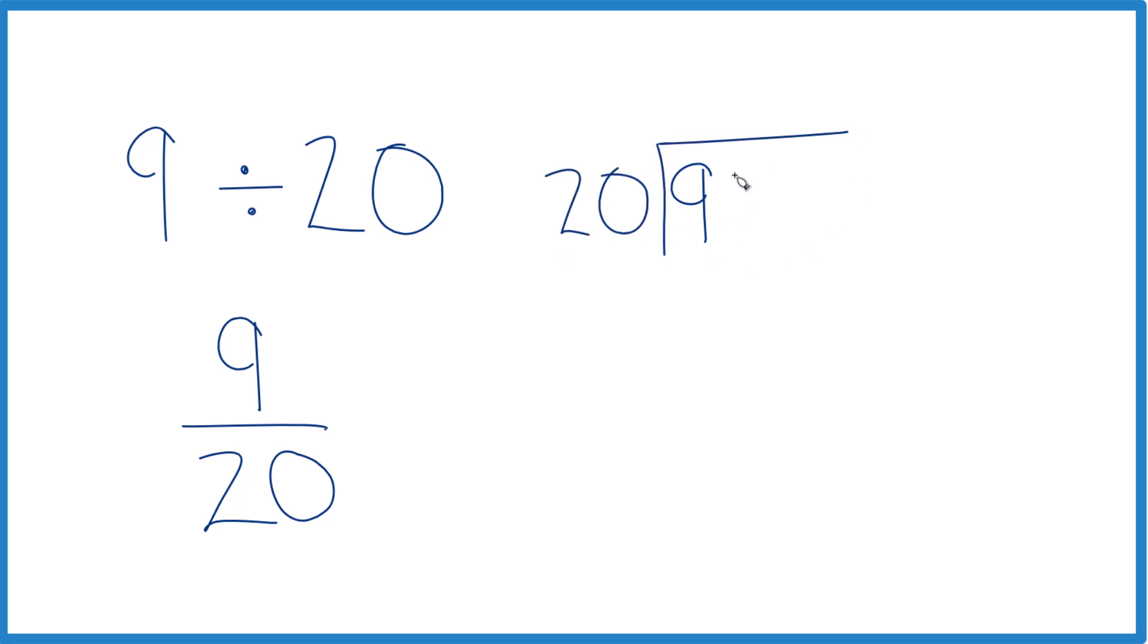It doesn't go into 9, but we could call this 90 if we put a 0 and a decimal point here. So now 20 goes into 90. 4 times 20 is 80. And when we subtract, we get 10.